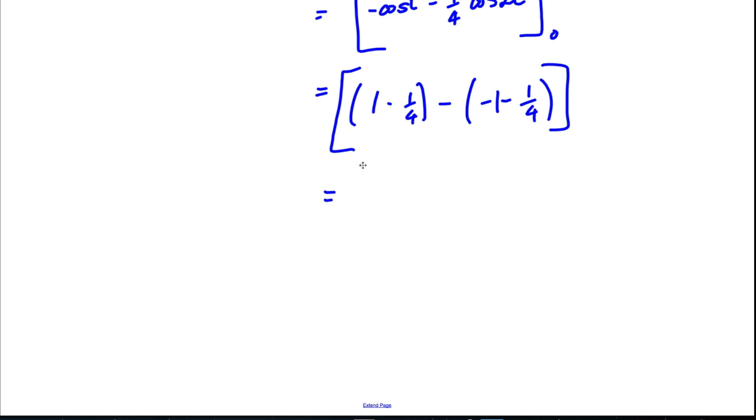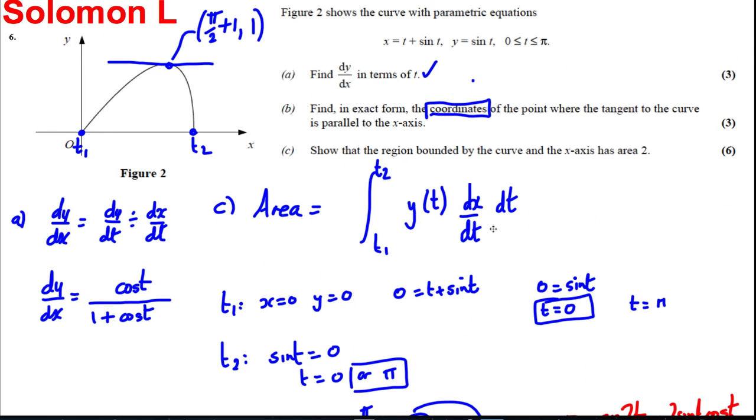Okay, and so what have we got there? We've got 1 minus 1 quarter is 3 quarters. Subtract negative 1, subtract a quarter. And that's going to be equal to negative 5 over 4. So they end up being a plus. So I'll get 8 over 4, which is 2 units squared as required. And we've done for this question.